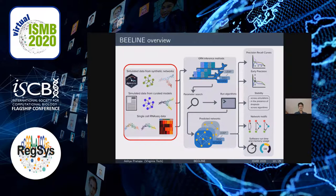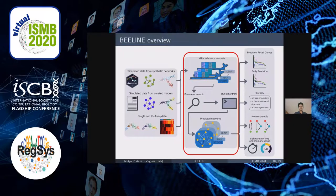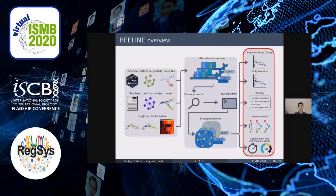We incorporated these solutions and developed a comprehensive evaluation framework we call BEELINE. In addition to BoolODE-simulated data using literature-curated boolean models, we consider two other types of inputs. We can take this input, run different algorithms, and BEELINE performs parameter search if necessary and obtains inferred GRNs. All algorithms are available via their own Docker containers for easy reproducibility. We evaluated the proposed GRN reconstructions by comparing them to ground truth networks under various measures such as area under the precision-recall curve, early precision, and stability and scalability measures.